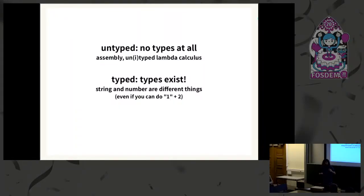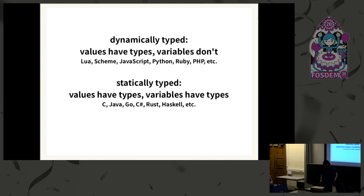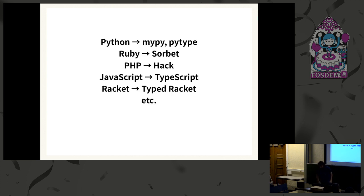I'll start with a quick recap of what I talked about last year. We're talking about adding types to languages. Every modern practical programming language has types, even though we call some typed and others untyped — strings and numbers are different things even if you don't name your variables. Dynamically typed languages have values with types but variables without, so any variable can accept any value. Statically typed languages have both values and variables typed, so only matching things can be assigned.